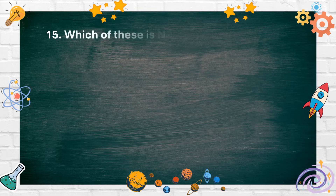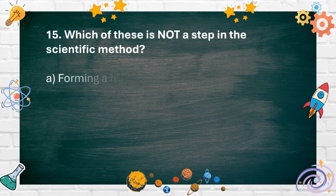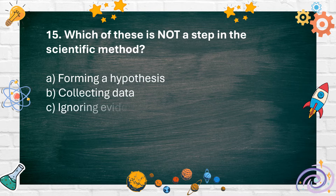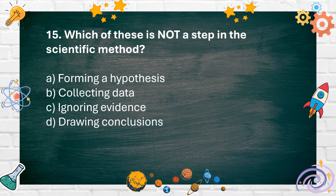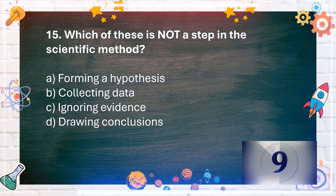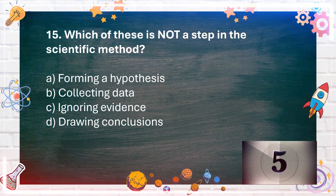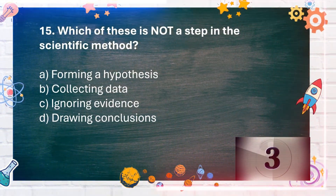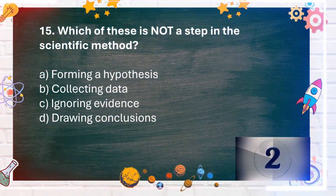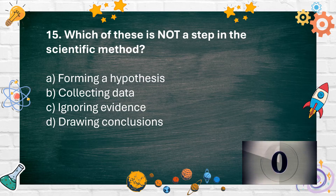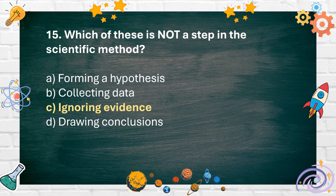Number 15. Which of these is not a step in the scientific method? A. Forming a hypothesis. B. Collecting data. C. Ignoring evidence. D. Drawing conclusions. The answer is C. Ignoring evidence.